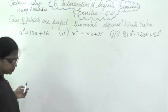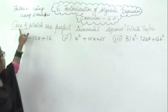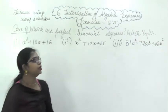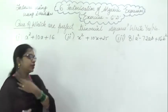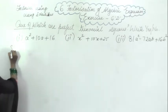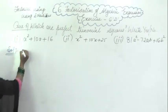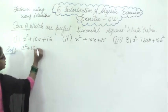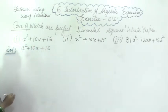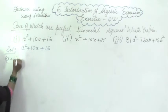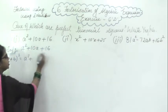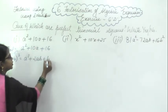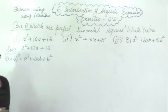Let's start with the first question of this exercise. That is A square plus 10A plus 16. Question 8 asks which are perfect trinomial squares. Among these you have to find out which are perfect trinomial squares and which are not. We will use the identity. Here it is given A square plus 10A plus 16 — both the signs are positive. So which formula are we going to use? A plus B whole square, which is A square plus 2AB plus B square.